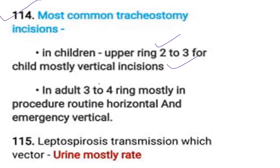In adults, the tracheostomy incision is made at the third to fourth ring — mostly horizontal in routine procedures, and vertical in emergency situations.